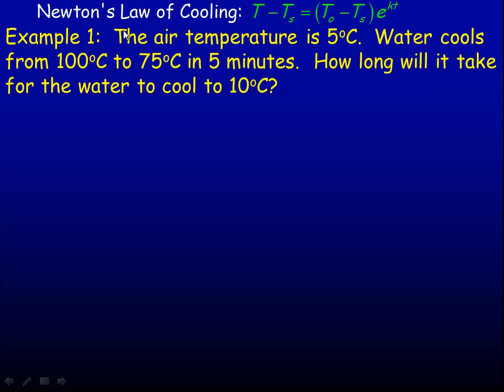In this Newton's law of cooling example, we'll look at two examples. Newton's law of cooling says that the rate something cools is proportional to the difference between its temperature and the ambient temperature. Some people refer to it as the air temperature, but ambient is just the surrounding temperature.